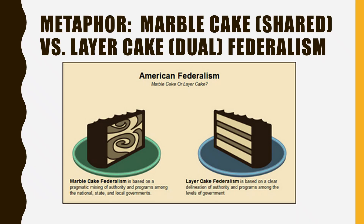A common metaphor used in a discussion of federalism is the marble cake versus the layer cake, or as a lot of textbooks use as their key terms, shared or cooperative federalism versus dual federalism. If you look at the marble cake, it is representative of a system of government where the two levels — the national government and the state government — work together, each utilizing their strengths.